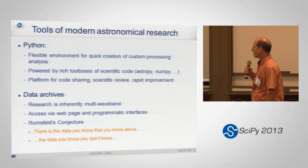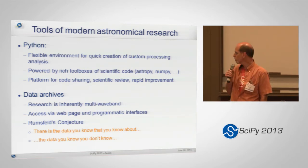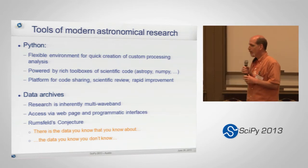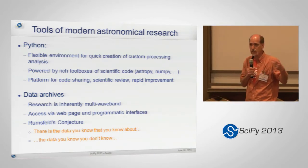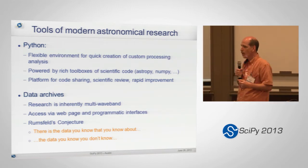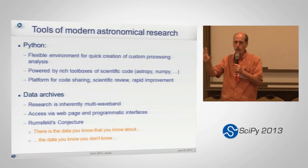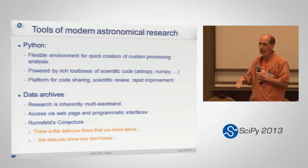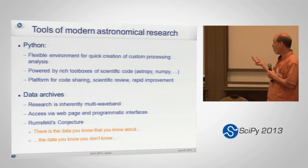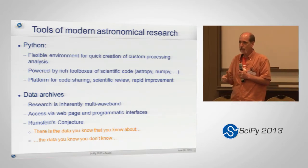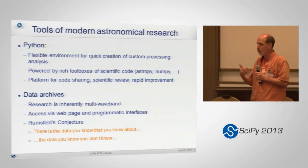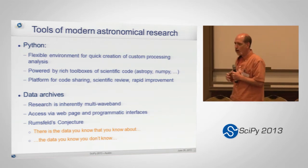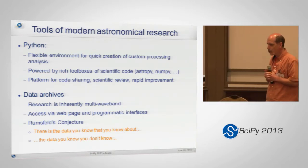The other trend is the availability of online data archives. This is defining the kind of research we do. Much of the research today is inherently multi-wavelength. When an astronomer gets data from the telescope, the scientific questions often require going to get data on those same sources at other wave bands from other observatories.